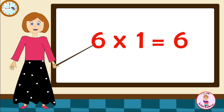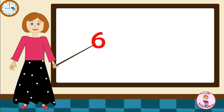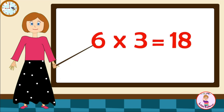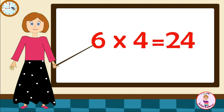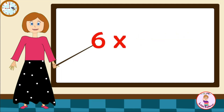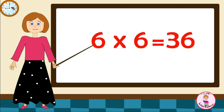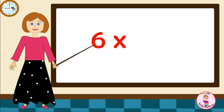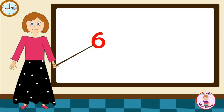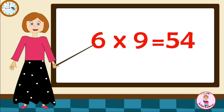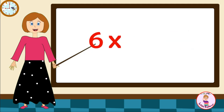Six-one's are six. Six-two's are twelve. Six-three's are eighteen. Six-four's are twenty-four. Six-five's are thirty. Six-six's are thirty-six. Six-seven's are forty-two. Six-eight's are forty-eight. Six-nine's are fifty-four. Six-ten's are sixty.